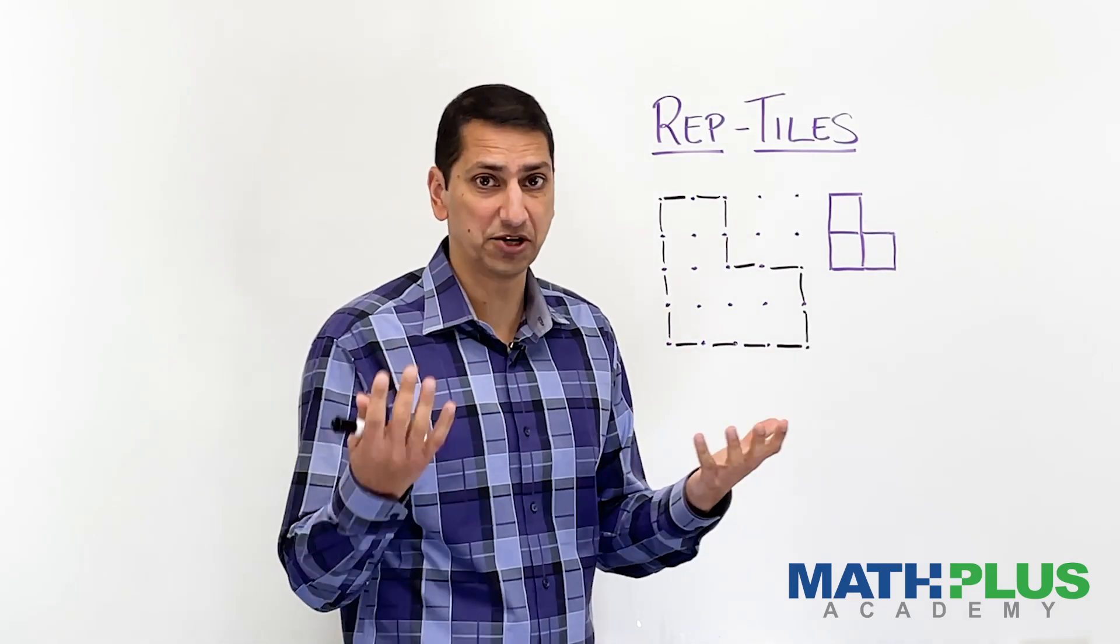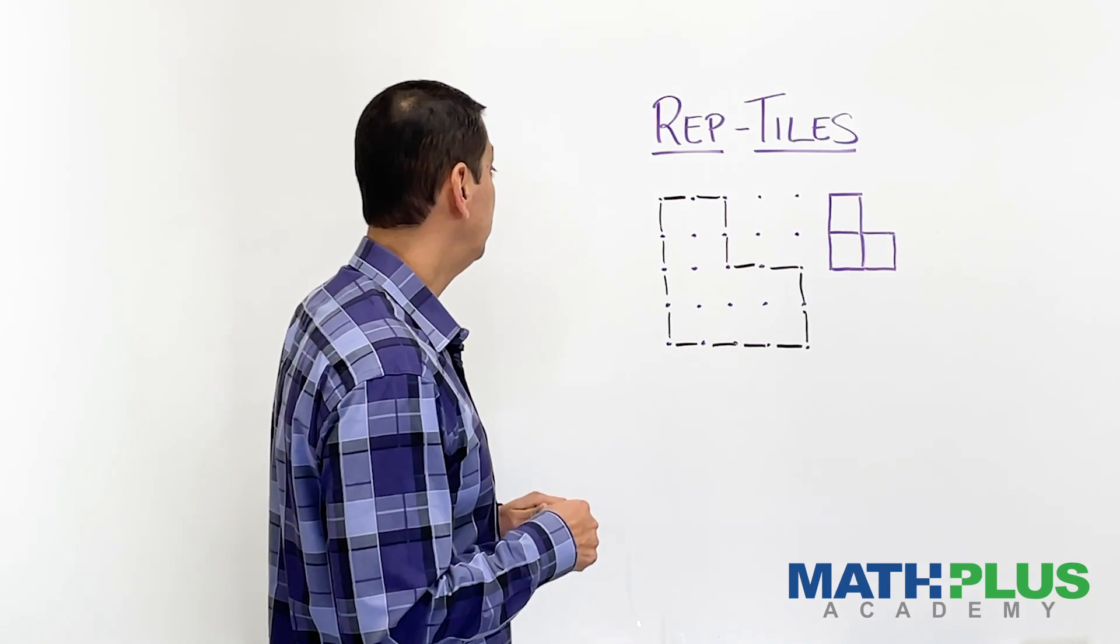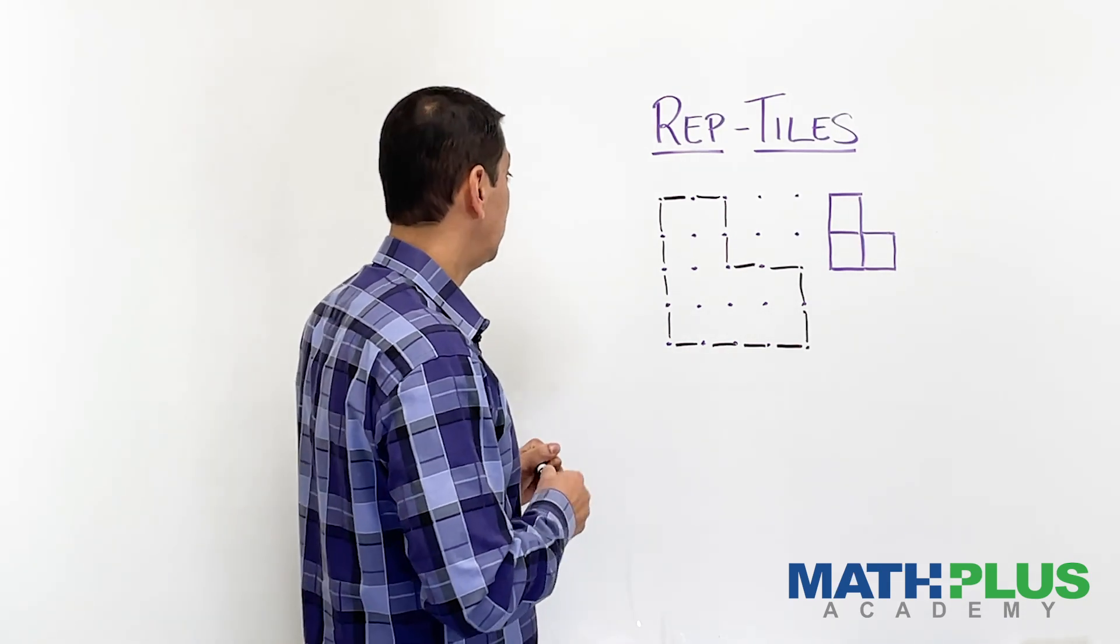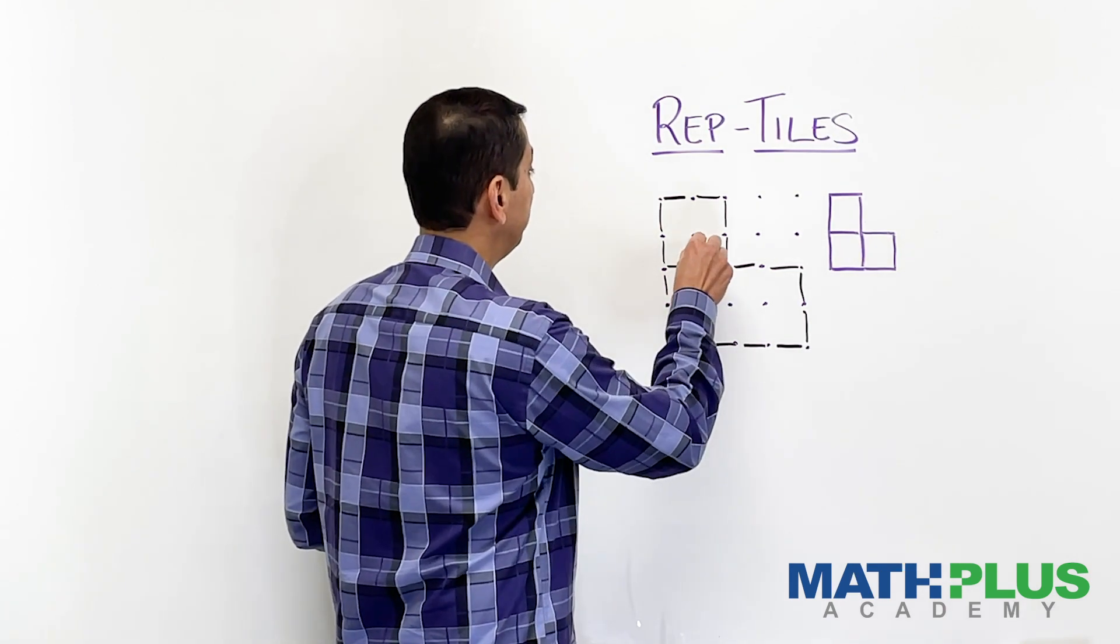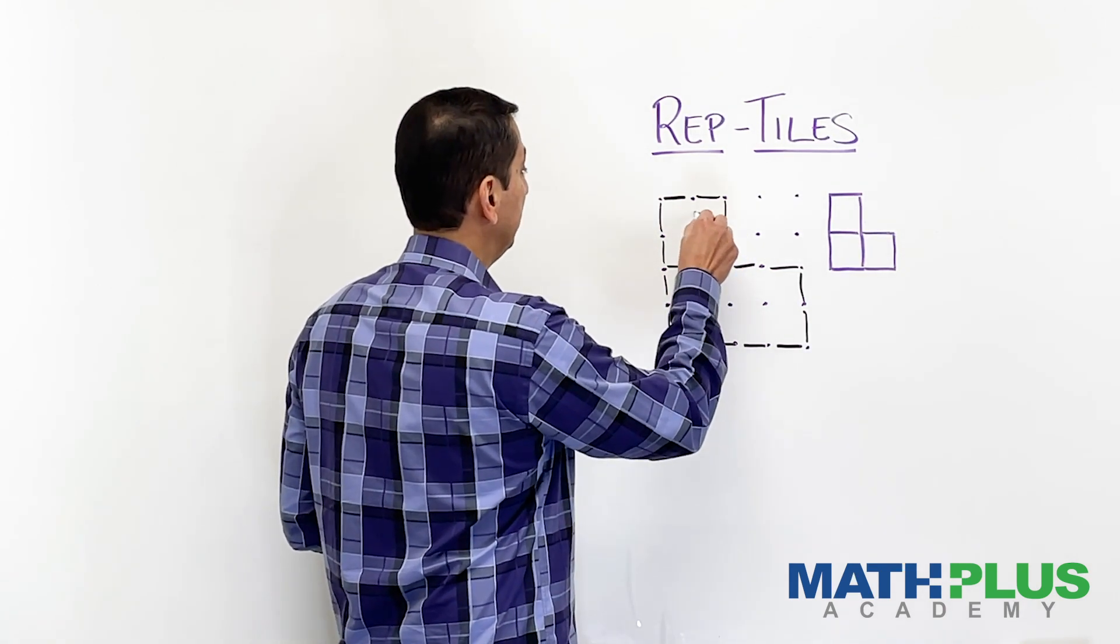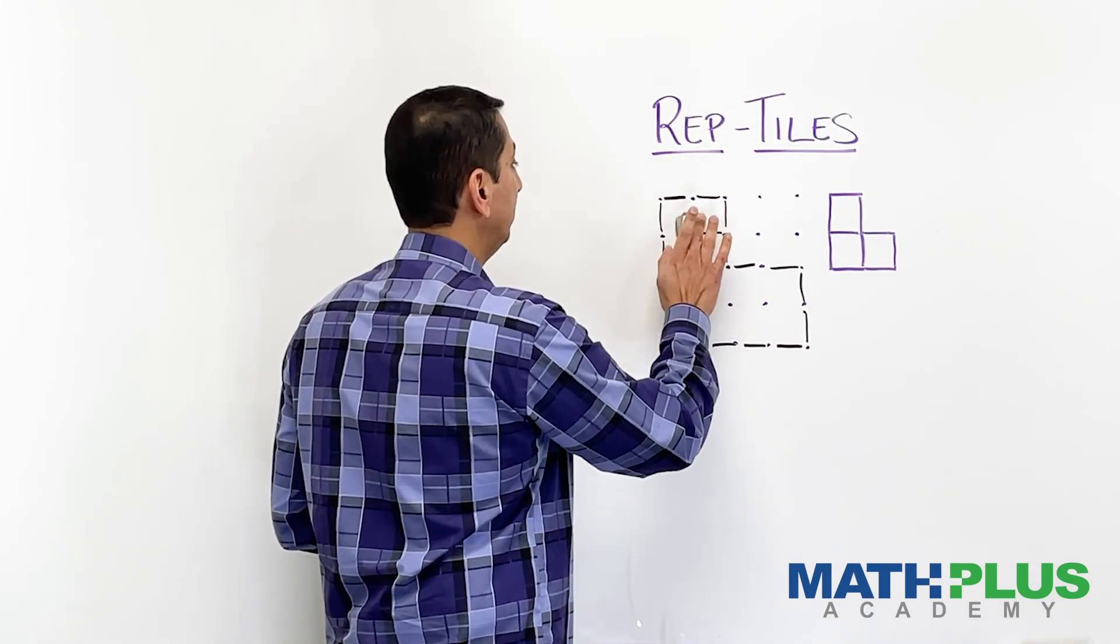So let me just try it to show you what I mean by trying to use these to fill up here. So one thing I might do is I might start by putting a tile, an L-shaped tile, right there. So there's one of my L-shaped tiles.